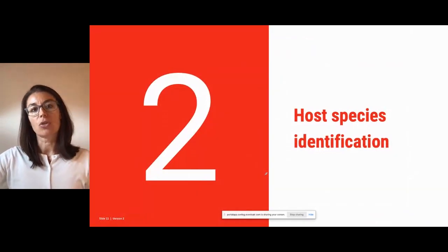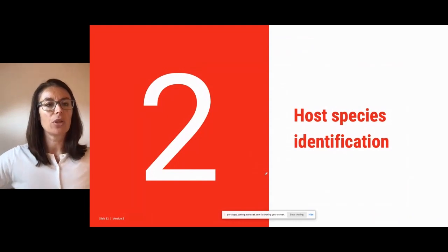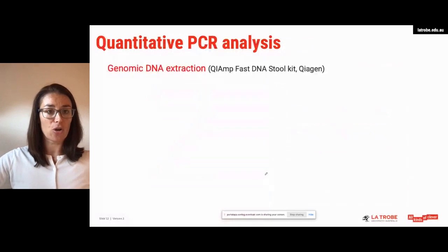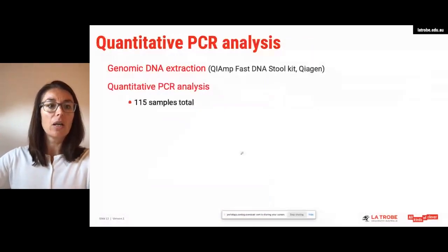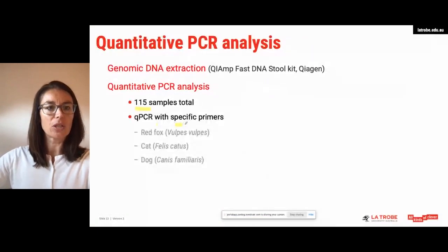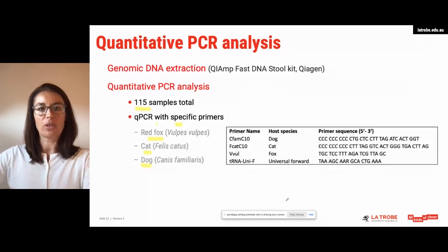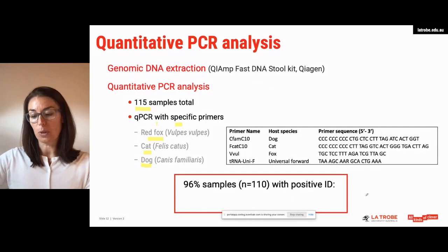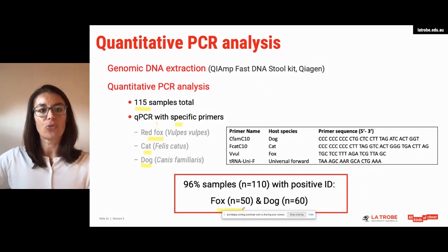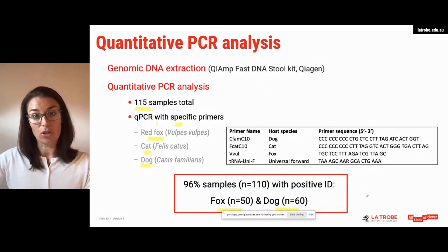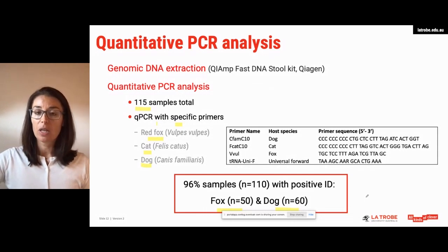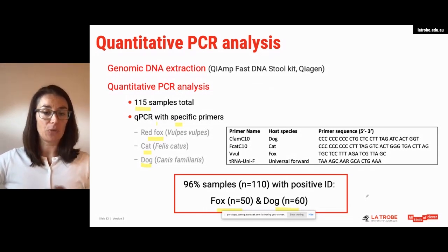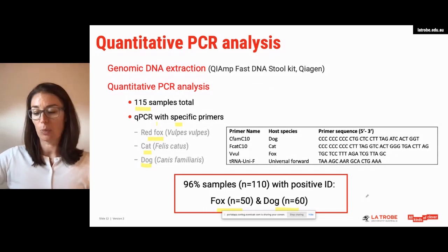Because we collected fecal samples from the ground using dogs, we needed to confirm the provenance of the samples. The first thing we did was identify the host species by performing a qPCR analysis. We extracted total genomic DNA from the samples and then performed qPCR on 118 samples using specific primers for fox, cat, and dog whose sequences had been previously published. As a result, we confirmed a positive ID on 96% of the samples: 50 samples were of fox origin and 60 of dog origin. Notably, six dog-identified samples also produced an amplicon for cat primers, likely due to dietary origin.